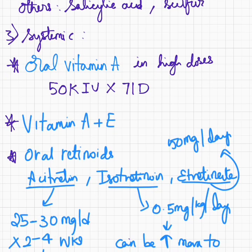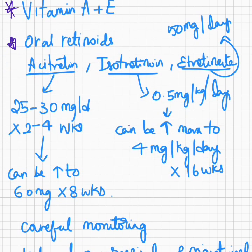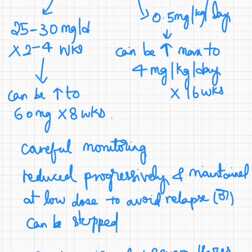Coming to systemic therapy, oral vitamin A in high doses such as 50,000 international units three times a day can be tried. Vitamin A in combination with E has also been found useful. Oral retinoids are useful for extensive disease; those commonly used for Darier's disease are acitretin and isotretinoin, and etretinate can also be used. Acitretin at 25–30 mg per day for 2–4 weeks should be started initially and later increased to 60 mg for 8 weeks. Isotretinoin can be started at 0.5 mg/kg/day and increased to a maximum of 4 mg/kg/day for 16 weeks. While the patient is on retinoids, careful monitoring is necessary and the dosage should be reduced progressively and maintained at a low dose to avoid relapse.